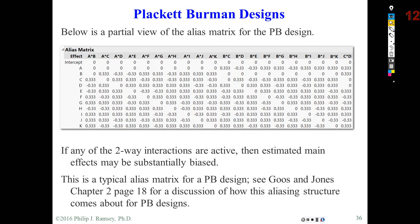On the next slide — this is from JMP — is the partial aliasing table. You can look through this table and see that if those two-way interactions are significant, I'm going to heavily alias the main effect because I'm missing the two-way interaction. I do point you to Hoos and Jones, chapter 2, page 18, where they explain where the one-third comes in as the alias weight or coefficient.